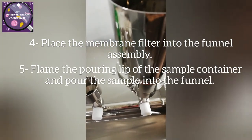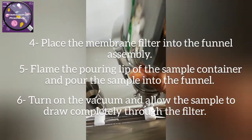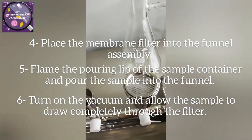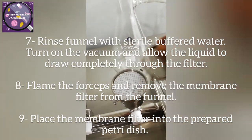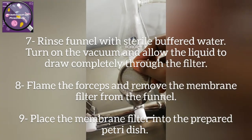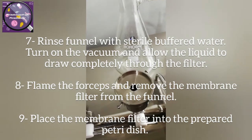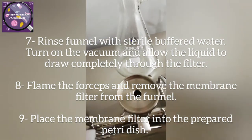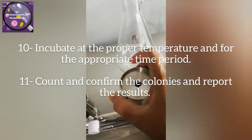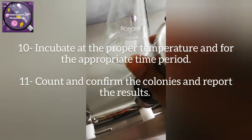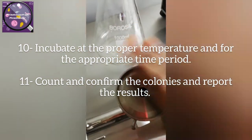Flame the pouring lip of the sample container and pour the sample into the funnel. Turn on the vacuum and allow the sample to draw completely through the filter. Rinse the funnel with sterile buffered water, turn on the vacuum, and allow the liquid to draw completely through the filter. Flame the forceps and remove the membrane filter from the funnel. Place the membrane filter into the prepared petri dish, incubate at the proper temperature for the appropriate time period, then count and confirm the colonies and record the results.